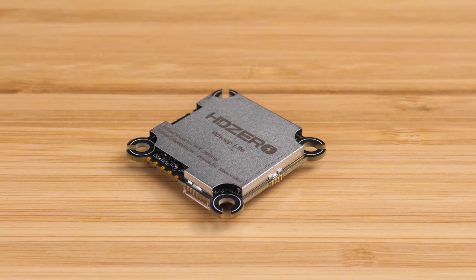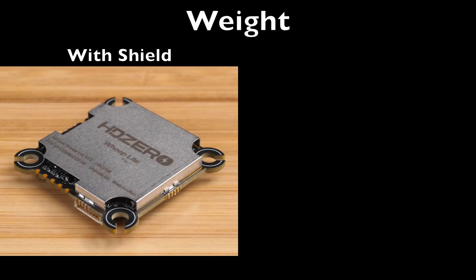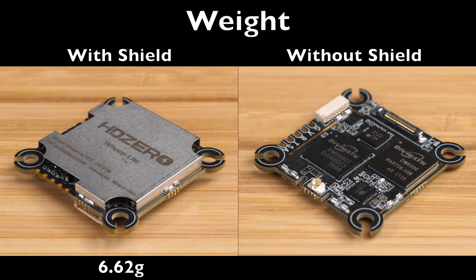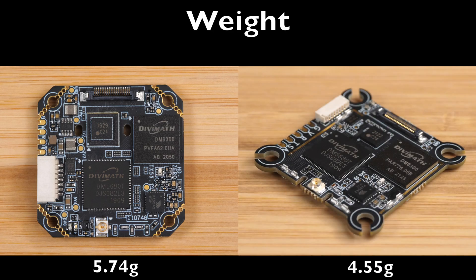And you might find yourself wanting to remove that shield because it does add weight to this VTX. With the shield on the total weight is 6.62 grams but if you remove the shield the VTX weighs only 4.55 grams so that shield is adding almost 2.1 grams of weight to the VTX. For comparison, the original Whoop VTX weighs in at about 5.74 grams so you're saving a little over a gram if you use this new VTX and don't install the shield.